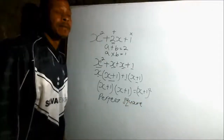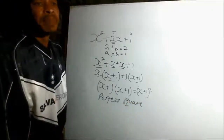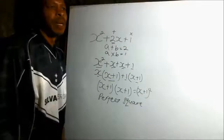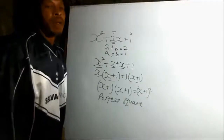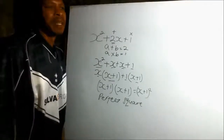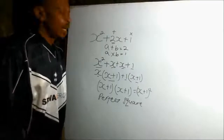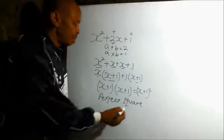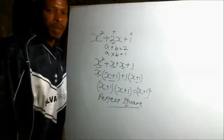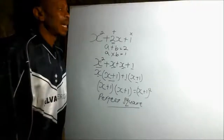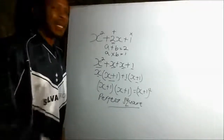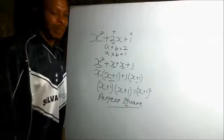Just like we say 1 squared is 1 — that is a perfect square. 2 squared is 4 — that is a perfect square. 3 squared is 9. It is the same as what we refer to here. Let us take another quadratic expression and see the difference.